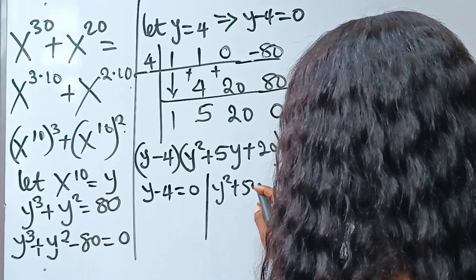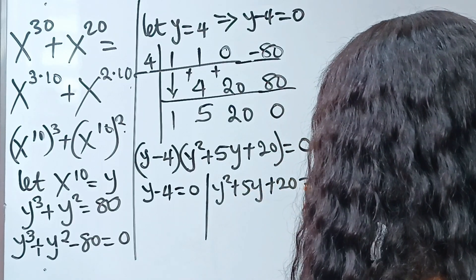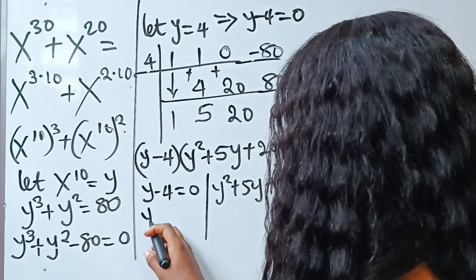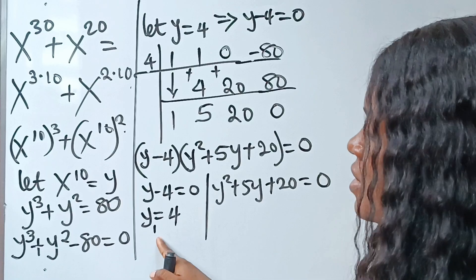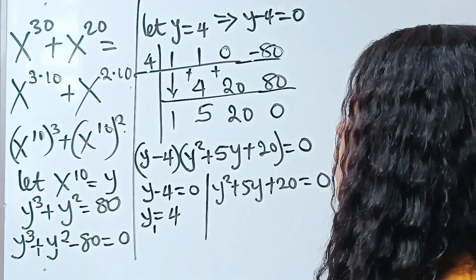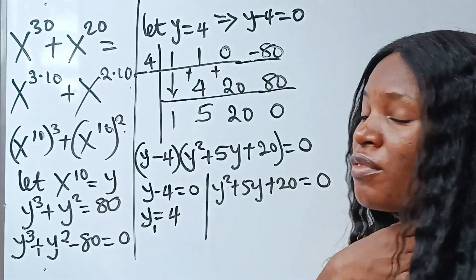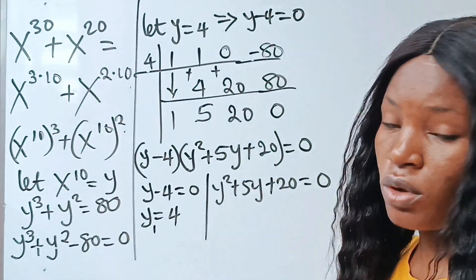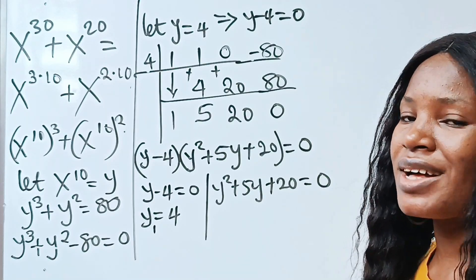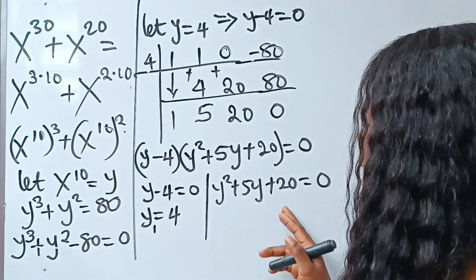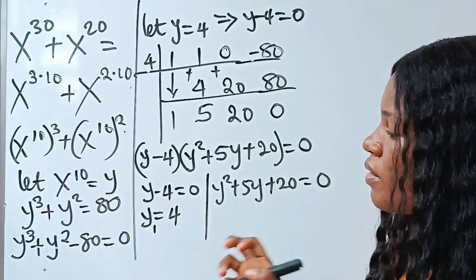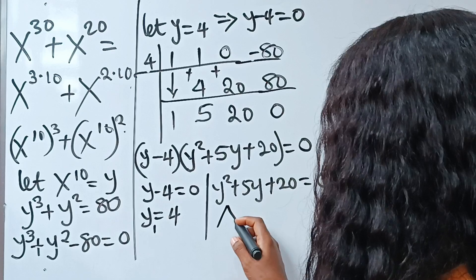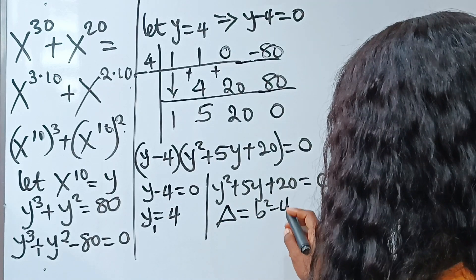From this factored form, we have y minus 4 equals 0, giving y equals 4 as our first value. And y squared plus 5y plus 20 equals 0. Remember, we are not looking for the value of y — we are looking for the value of x. We can solve the quadratic using the quadratic formula, but first let's check if it gives complex roots.